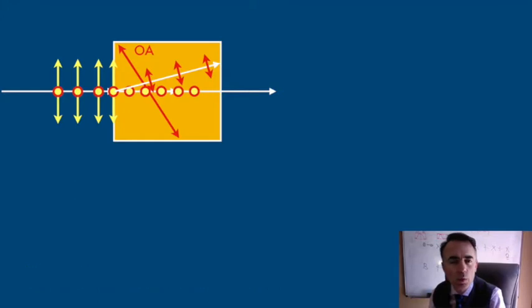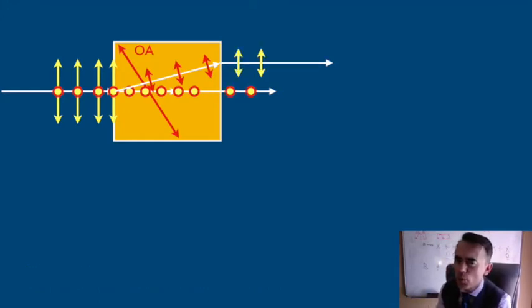The ordinary ray is unaltered, but the extraordinary ray sees its trajectory altered.